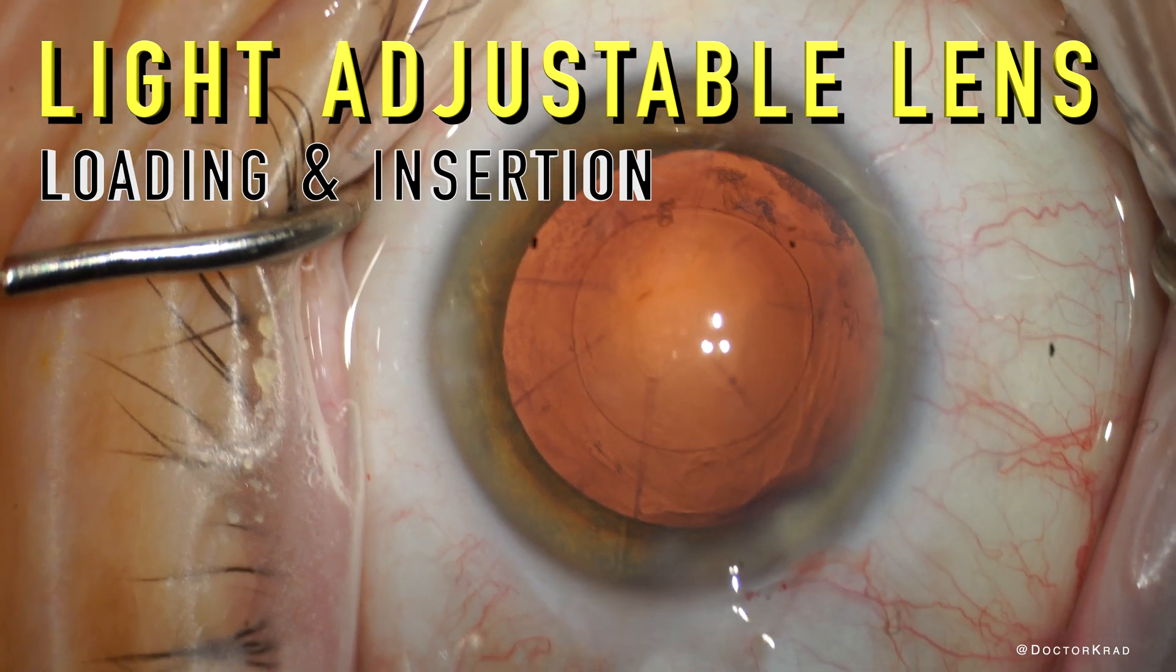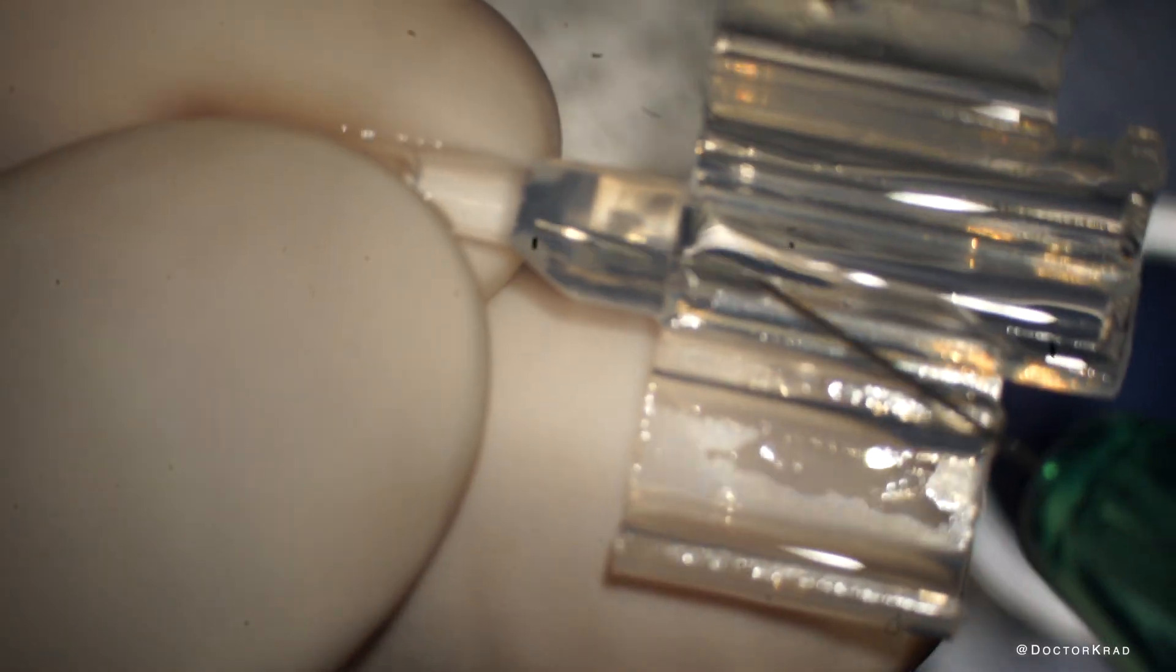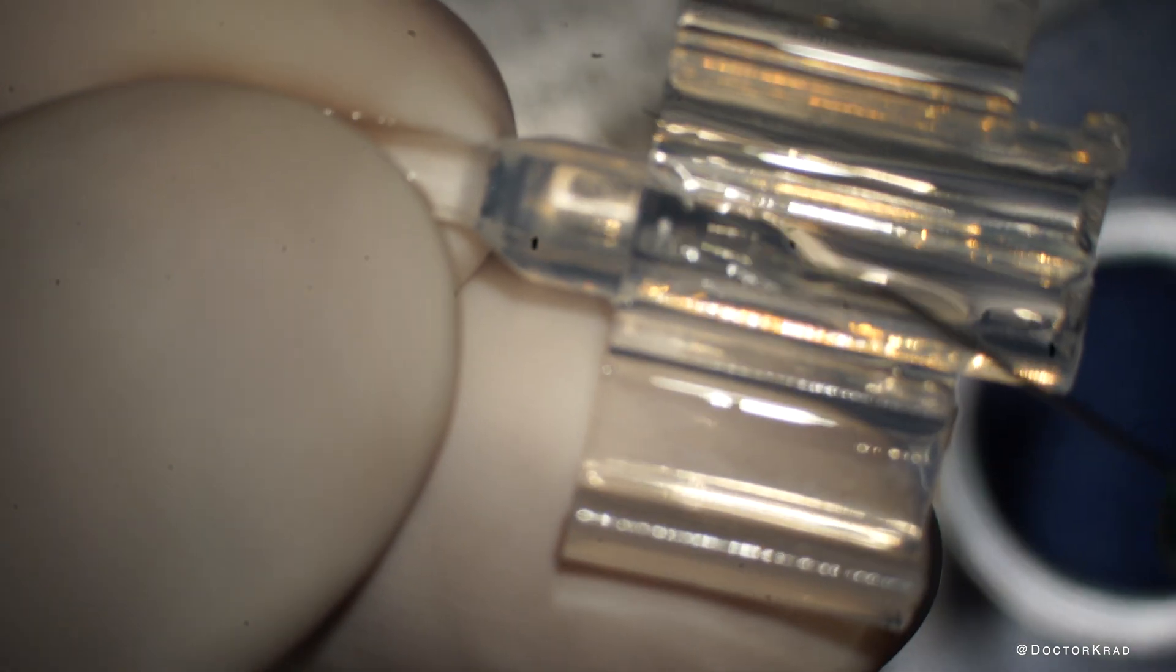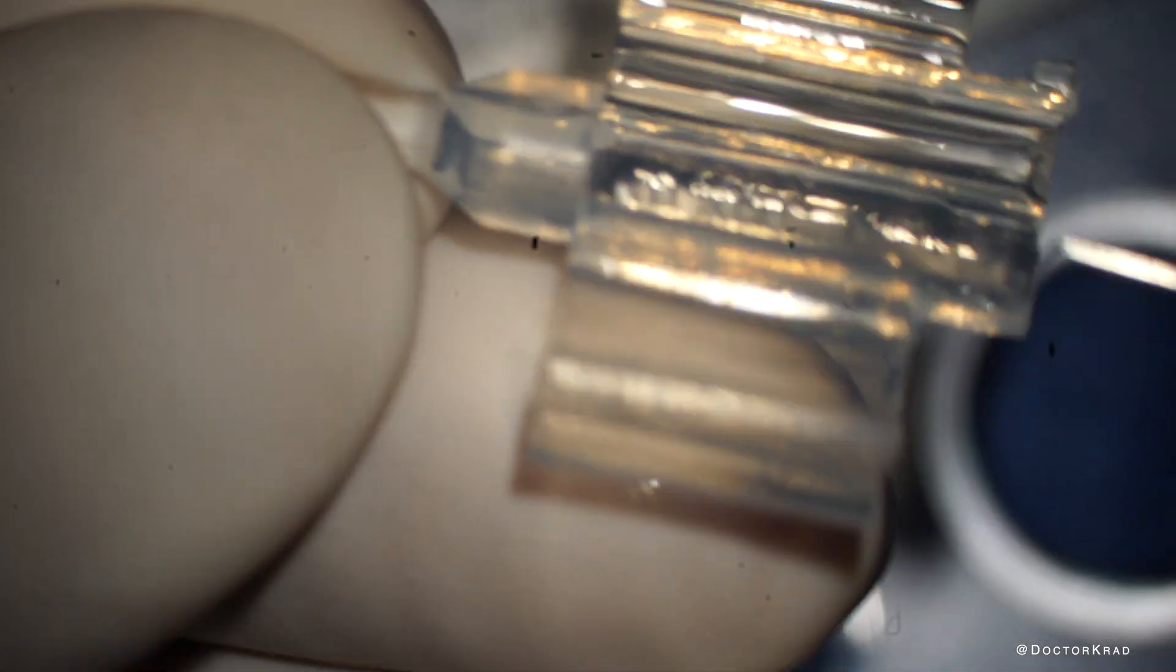Hi everyone. Today I'm going to show you how to load the light adjustable lens. So first you fill the nozzle with viscoelastic as well as the base of the cartridge.